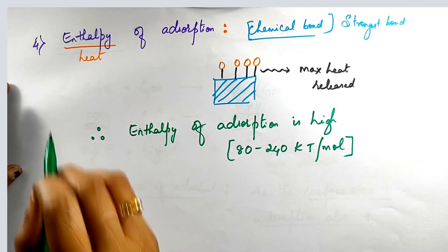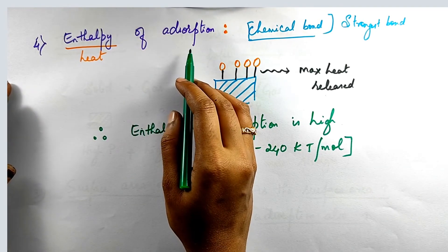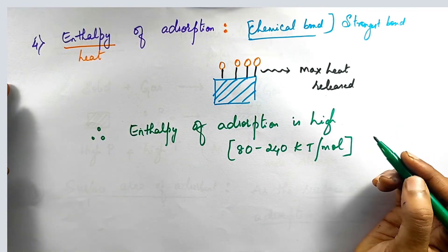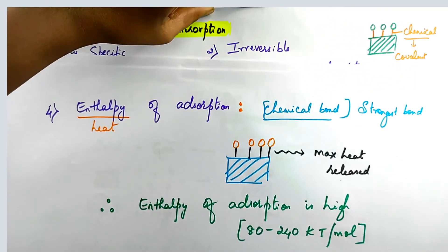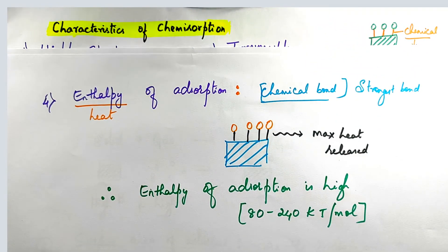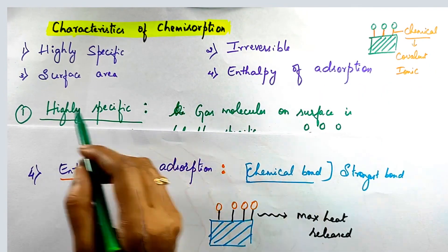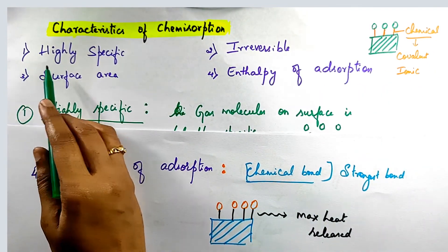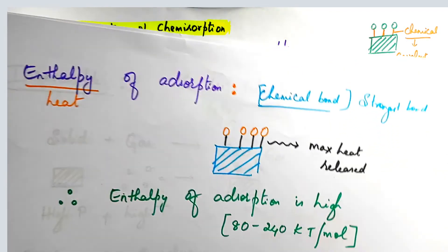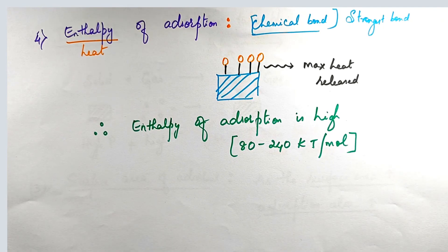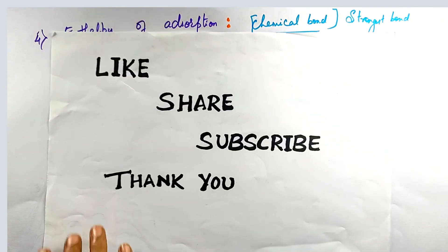These are the four characteristics of chemical adsorption or chemisorption. This is all about today's video on characteristics of chemisorption. It mainly depends on bond strength. The four points are: highly specific, irreversible in nature, surface area of adsorbent, and enthalpy of adsorption. If you have any doubts, please comment below, and if you like my video, please like, share, and subscribe to my channel. Thank you.